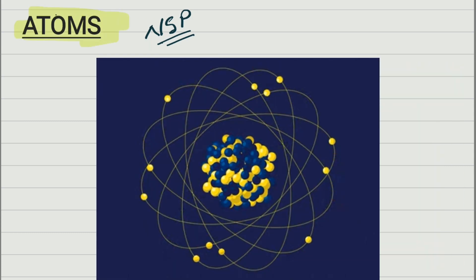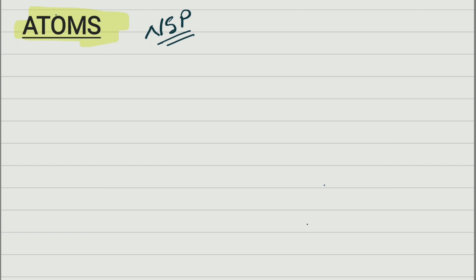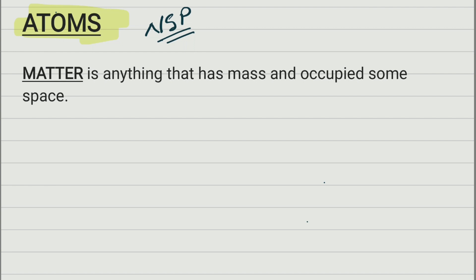Before we start, let's quickly record something you guys learned in previous grades, in primary school and very lower grades. You learned what is matter. Matter is anything that has mass and occupies some space. In other words, matter is everything, because everything occupies space — even though the space sometimes is very small — and everything has mass, even though sometimes the masses are very small. All the different parts of matter we call objects.